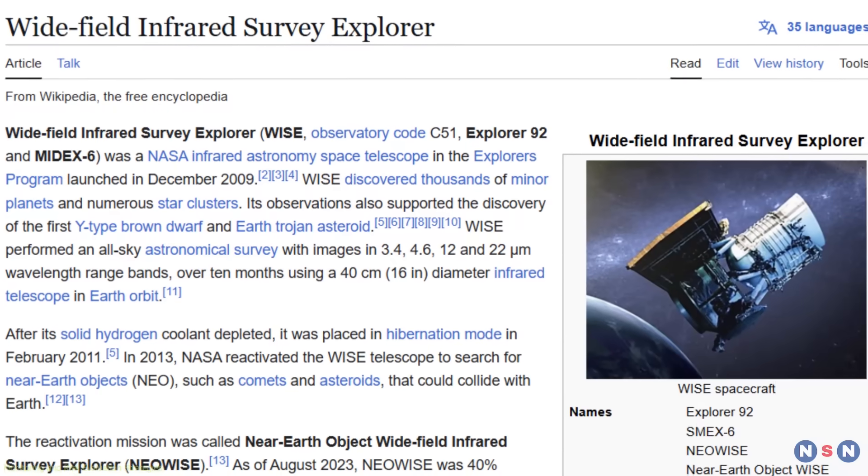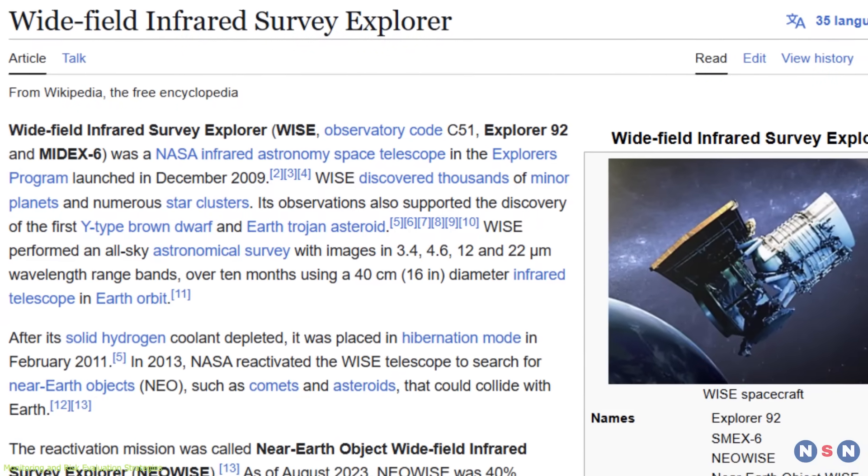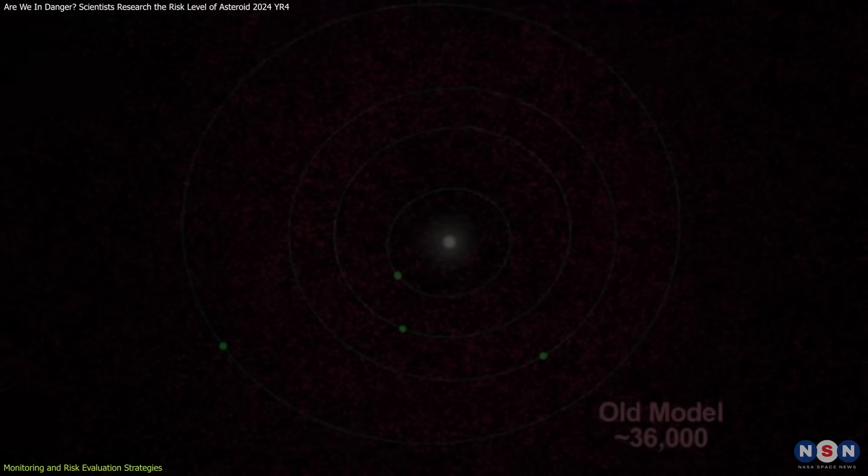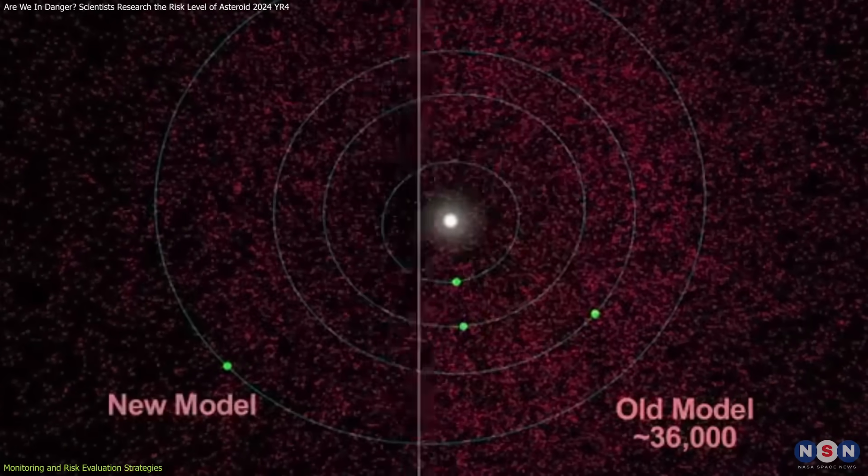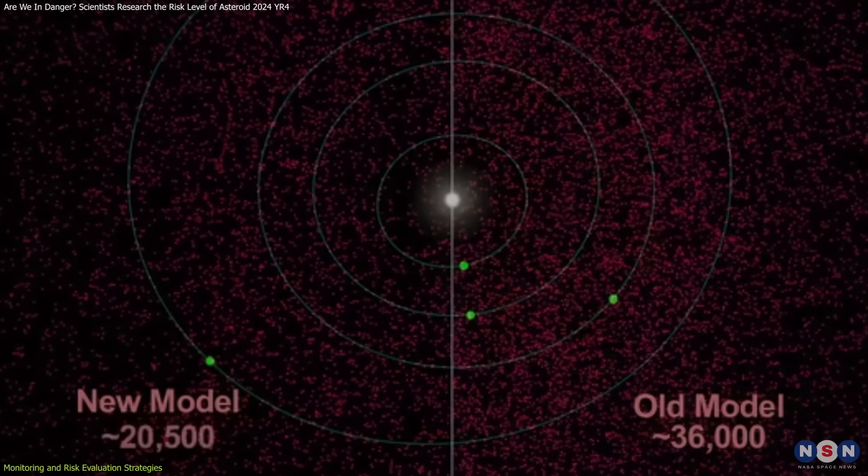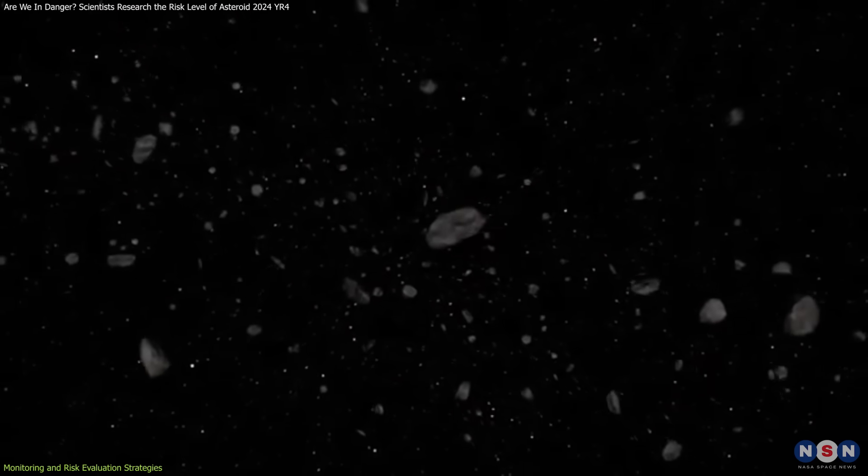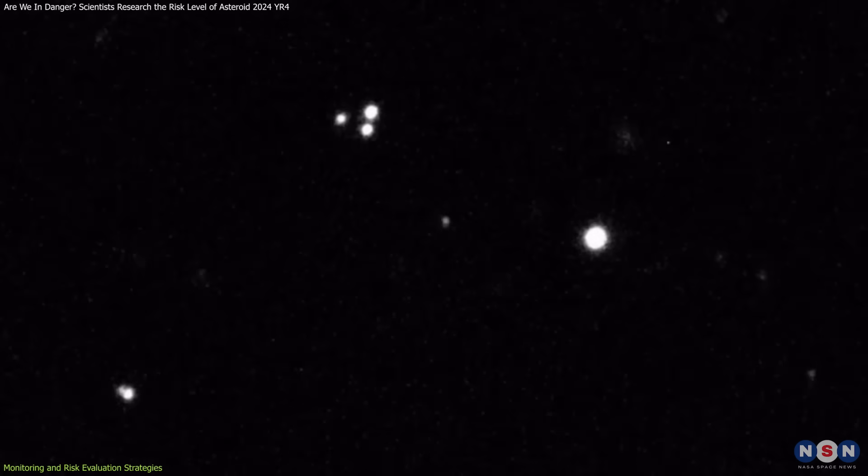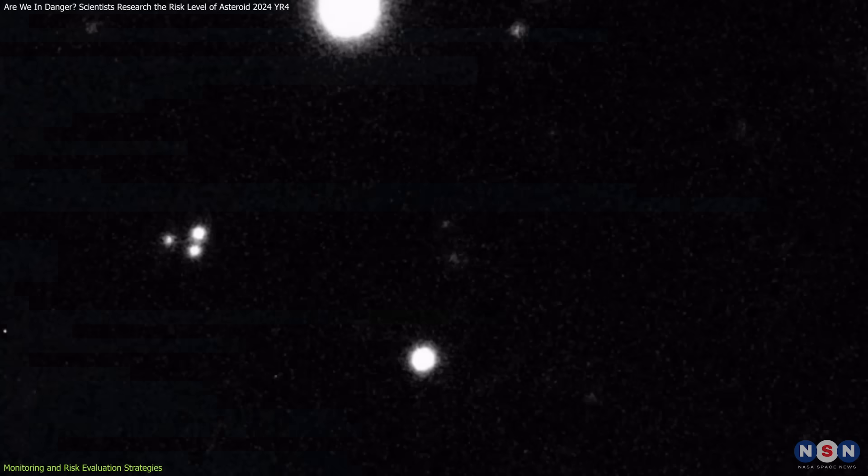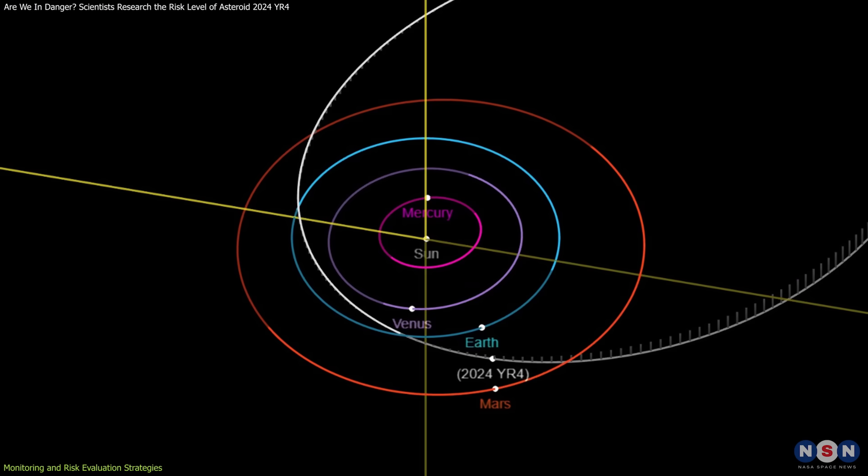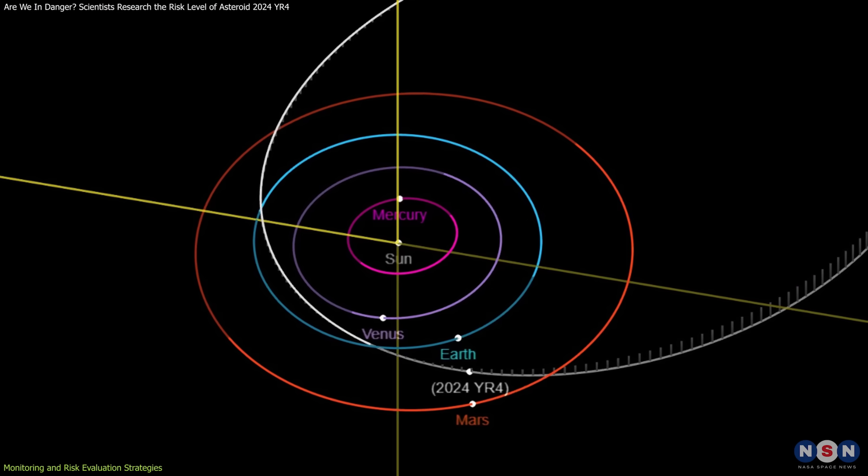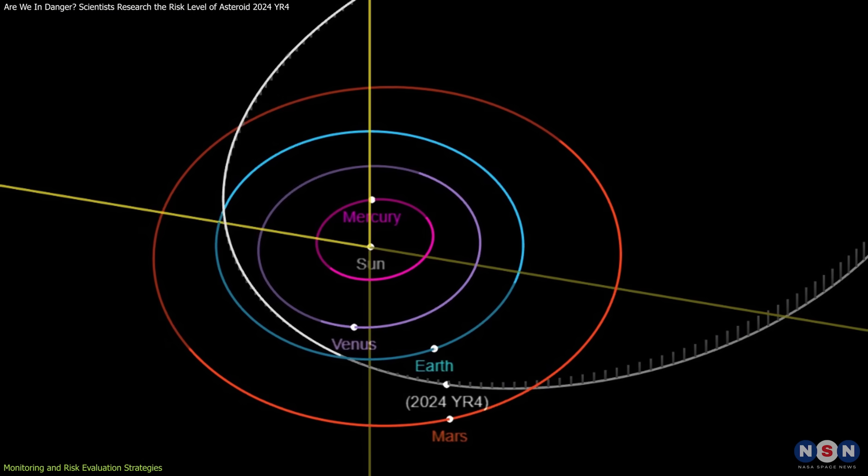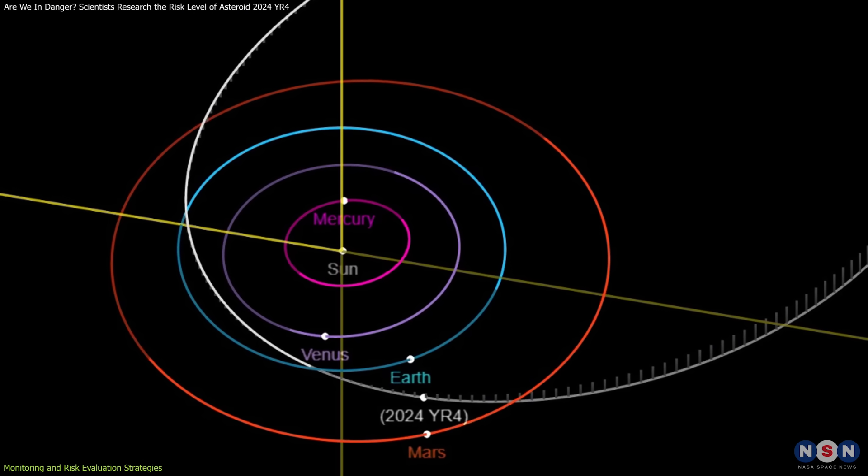Instruments like NASA's Near Earth Object Wide Field Infrared Survey Explorer use infrared technology to detect the heat signatures of asteroids, enabling the discovery of objects that may be too dark to see in visible light. The evidence gathered from these instruments allows scientists to estimate the size, composition, and trajectory of objects like 2024 YR-4, providing a crucial first step in risk assessment.